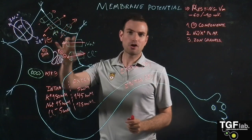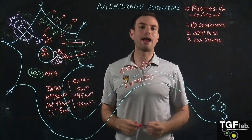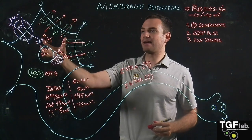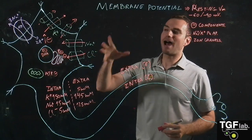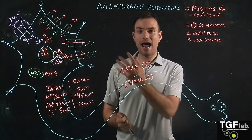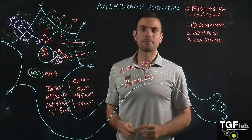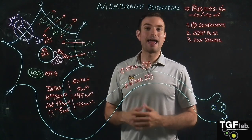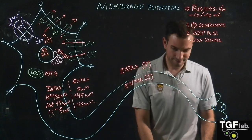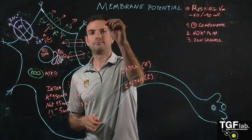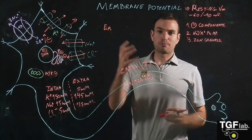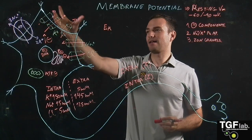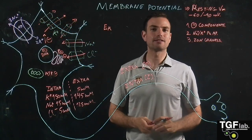There are two different processes going on simultaneously: a concentration gradient process and an electric gradient. As ions are pumped in and out, an electric gradient is established. At some point the electric gradient will neutralize the concentration gradient, and this point is called the equilibrium potential — the membrane potential at which the transport of different ions is neutralized.